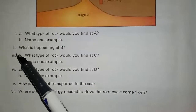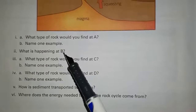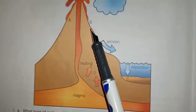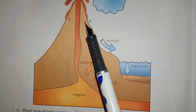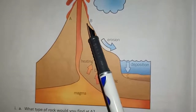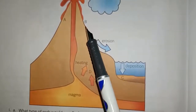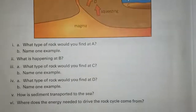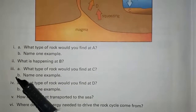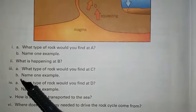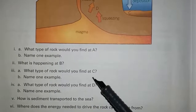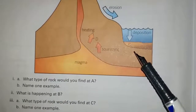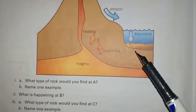Question number 7, part 2: what is happening at B? Molten lava is flowing down and solidifying at point B. Question number 7, part 3A: what type of rock would you find at C? Here we could find sedimentary rocks.